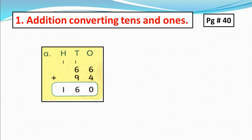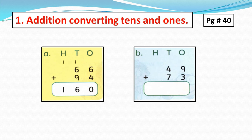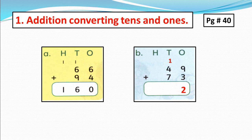Now I am going to solve part B of question 1. Let's add: 9 plus 3 equals 12. We cannot write 12 in the 1s column, so we convert 12 ones into 1 ten and 2 ones. We write 2 in the 1s column and put 1 ten into the 10s column above 4. Now add these 10s: 1 plus 4 equals 5, and 5 plus 7 equals 12 — so we have 12 tens, which means 1 hundred and 2 tens. We write 2 in the 10s column and put 1 hundred into the 100s column. There is only 1 hundred, so we write 1 in the 100s column. The answer is 122.